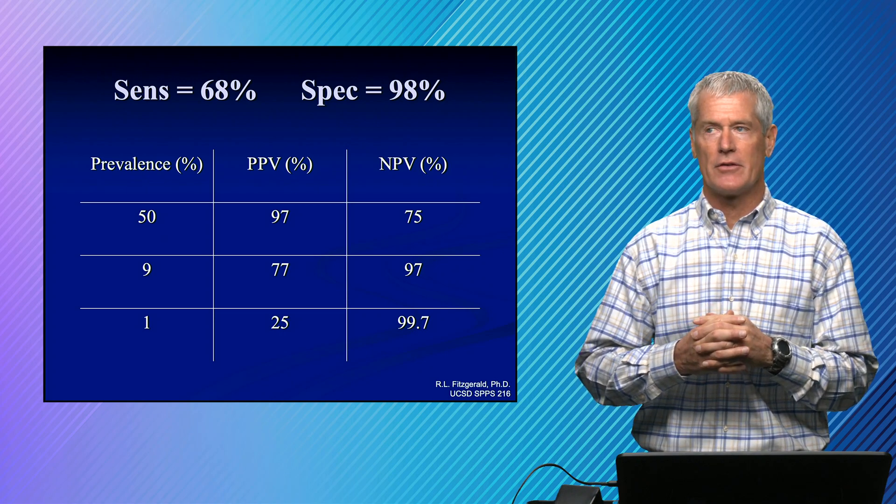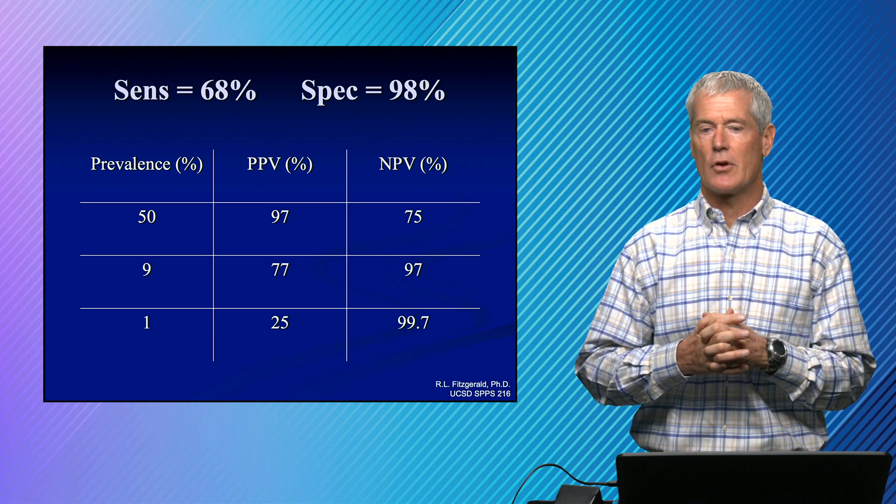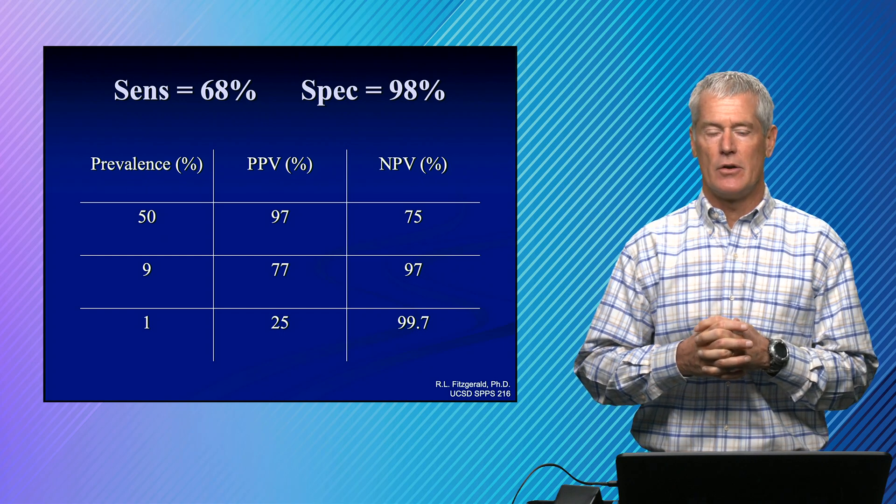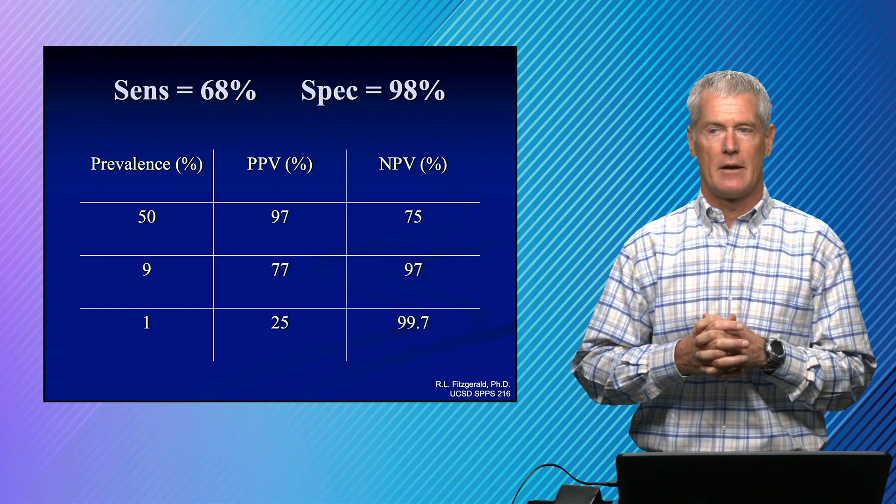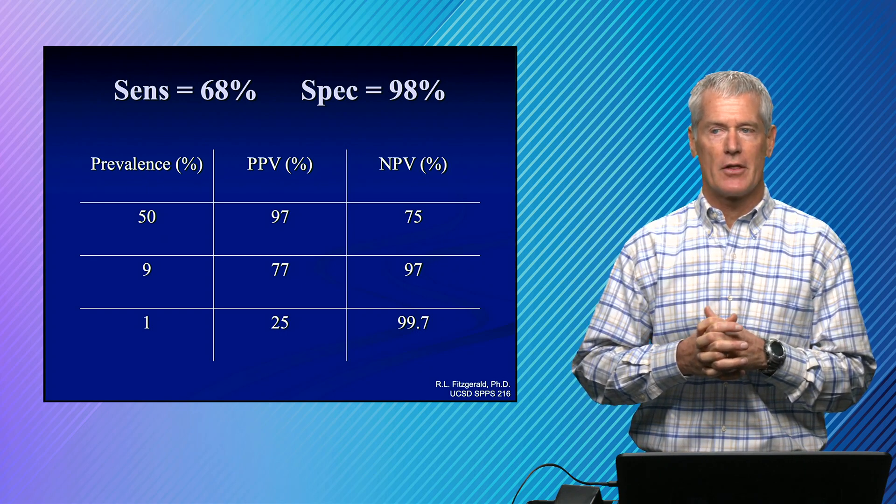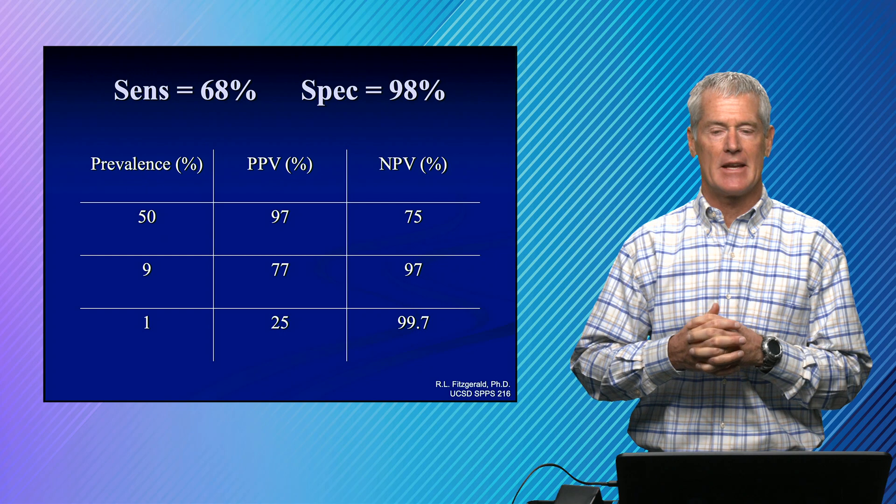And using that test, if we look at varying the prevalence of the disease, what happens to our predictive values? And so you can see in this chart, the prevalence starts out at 50 percent and it goes to 1 percent. And as the prevalence drops, the positive predictive value of that test drops.